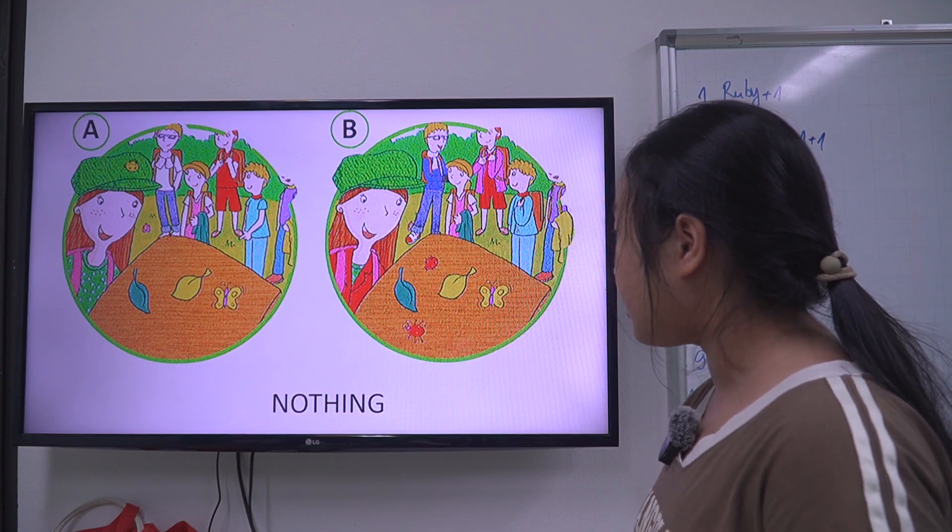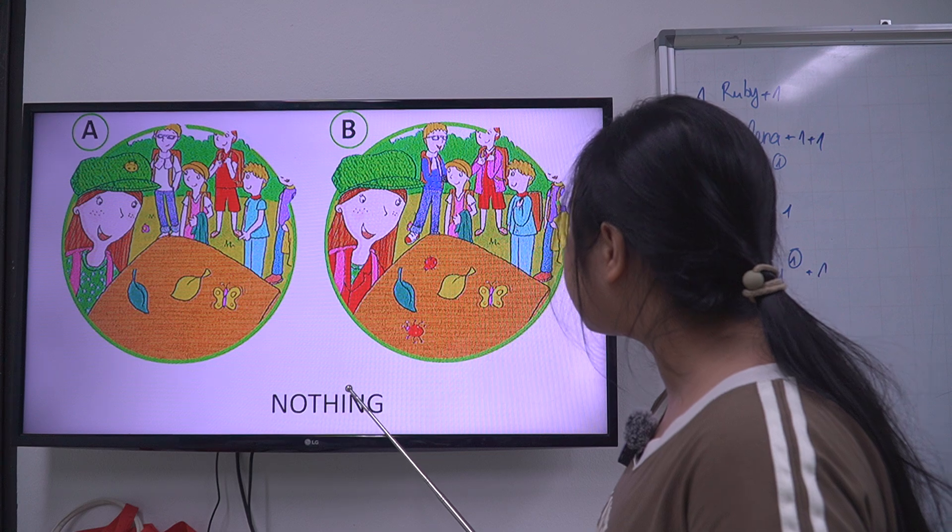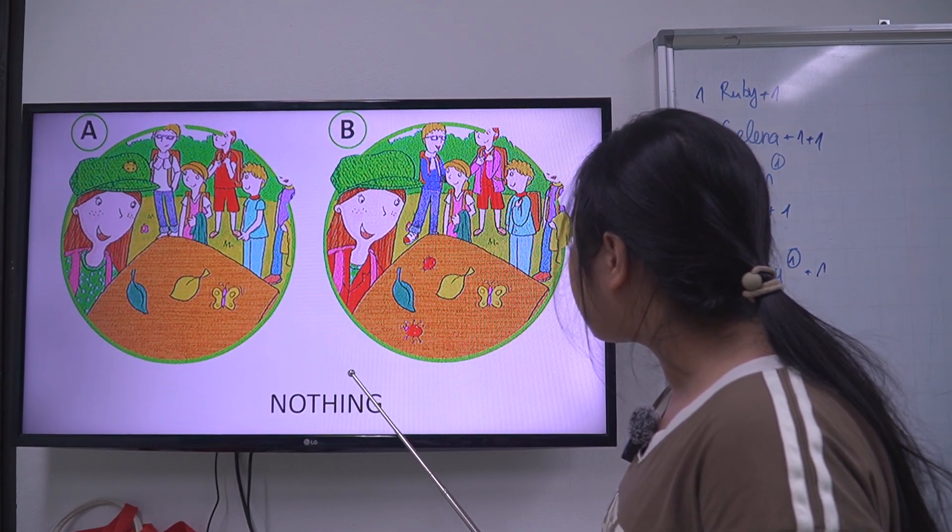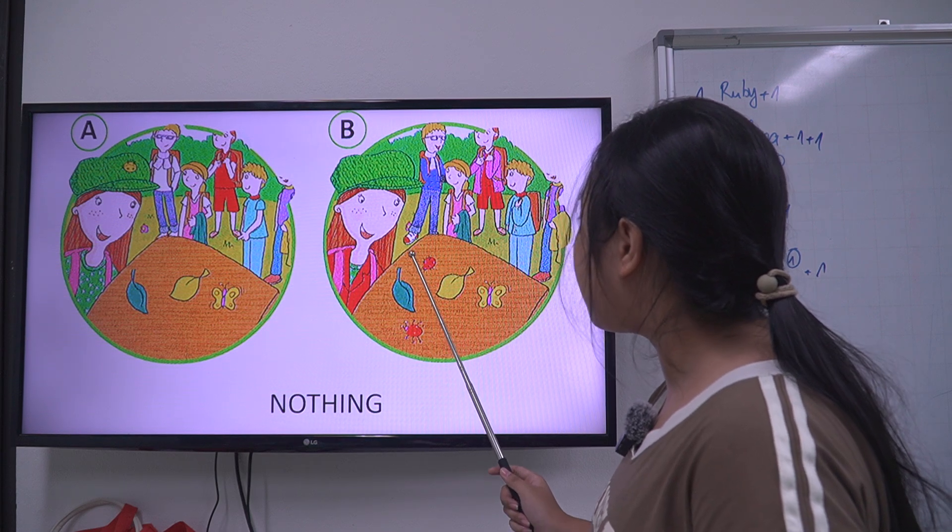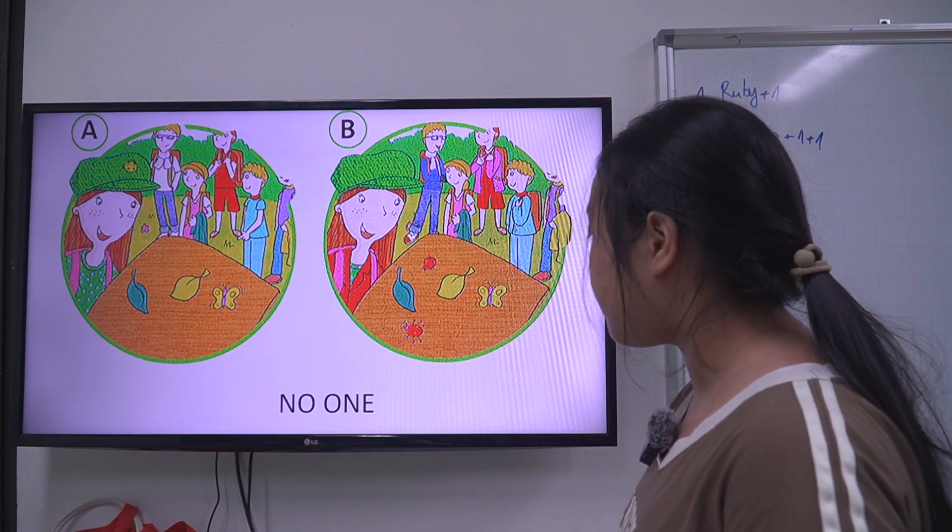Very good. Next, nothing, picture B. In picture B, nothing is on the table. Next one. Now,